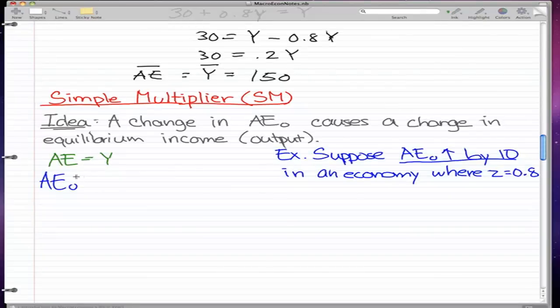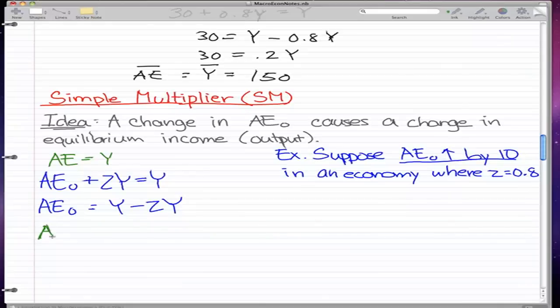AE0 plus ZY, and that is equal to Y. Now we can make it so that we take the ZY and bring it over to the other side to make it Y minus ZY. And we do some simple math on it, so we do AE0 equals 1 minus Z over Y.